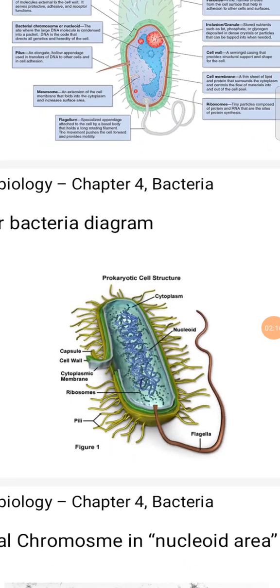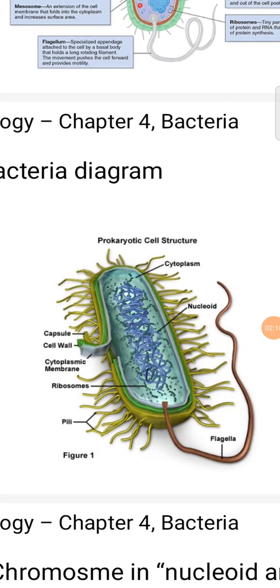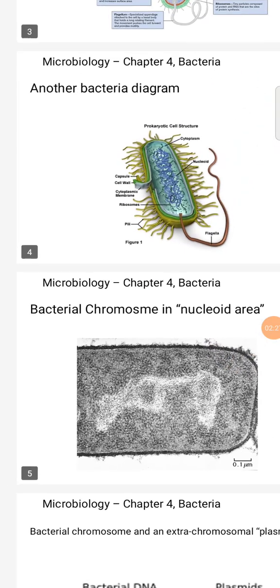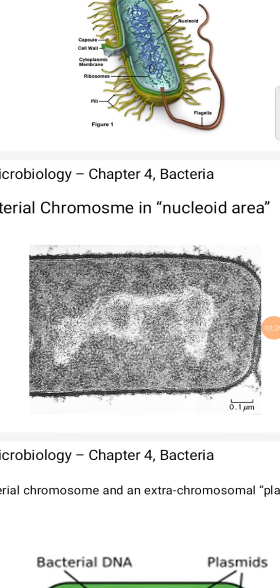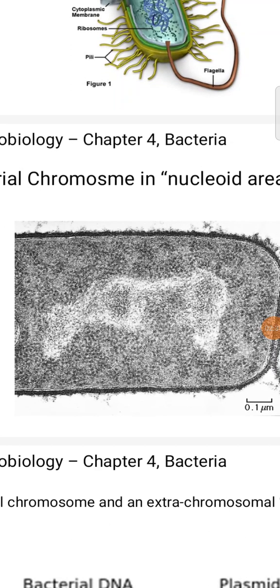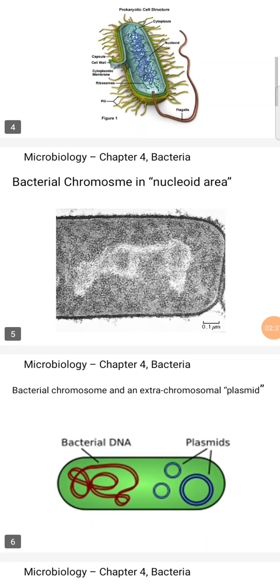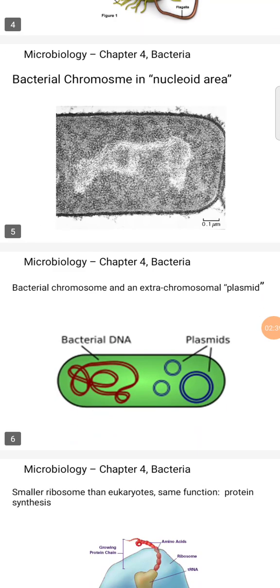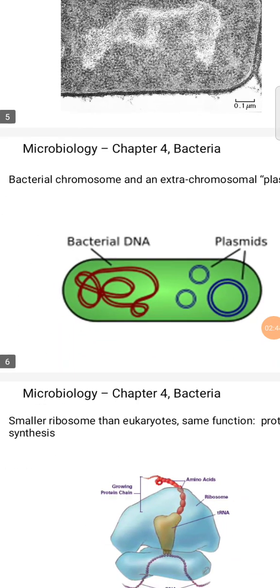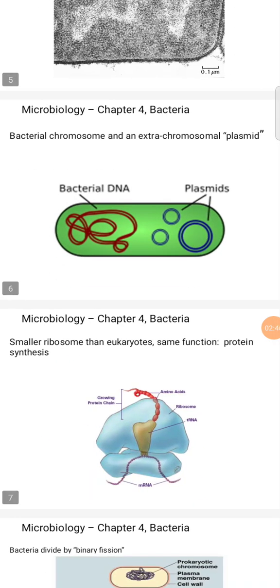This is the bacterial diagram showing the prokaryotic cell structure, including cytoplasm, nucleoid, cell wall, ribosomes, flagella, and bacterial chromosome in the nucleoid area of size 0.1 micrometers. The bacterial chromosome and extra-chromosomal plasmids together constitute the bacterial DNA.